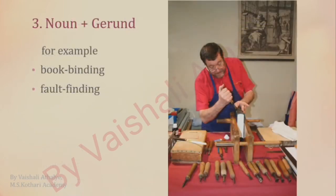The third way to form a compound word is putting a noun and then a gerund. For example: bookbinding, fault finding. Here, the noun comes first and then a gerund to form a compound word.